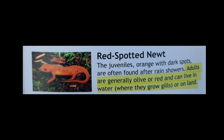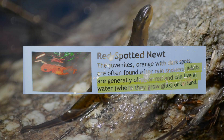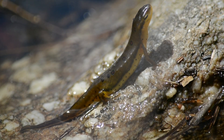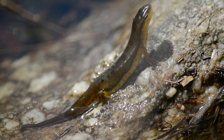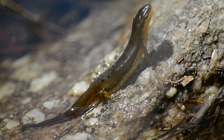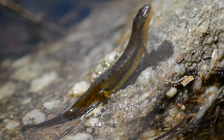Looking at the inside page of this pamphlet, there is information about the Eastern Newt. It reads: 'The juveniles, orange with dark spots, are often found after rain showers' — which is absolutely true. But the next bit is where the problem comes in. It goes on to say that 'adults are generally olive or red.' I have never seen an adult Eastern Newt still with its red coloration. Every single adult Eastern Newt I have ever seen or kept has had the olive green coloration with red spots. It then says they 'can live in water,' implying it's an optional lifestyle.